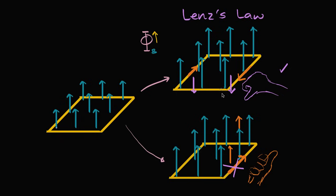If Lenz's Law weren't true, you'd have a violation of conservation of energy. In general, whenever there's a change in flux in a certain direction, the induced current will flow in whichever direction produces a magnetic field that opposes that change. If the flux is increasing, the induced magnetic field should make the flux decrease. If the flux is decreasing, the induced magnetic field should be additive to the flux, opposing the decrease.